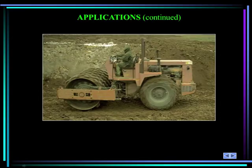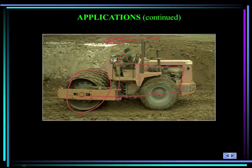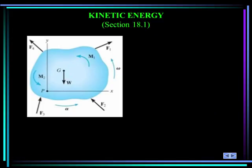Here you see a soil compactor. You see the frame and then there's a roller. The work done by the compactor's engine is transformed into the translational kinetic energy of the frame and the translational and rotational energy of the roller. So the frame is translating, so it has kinetic energy, and the roller is both rotating and translating — it also has kinetic energy.